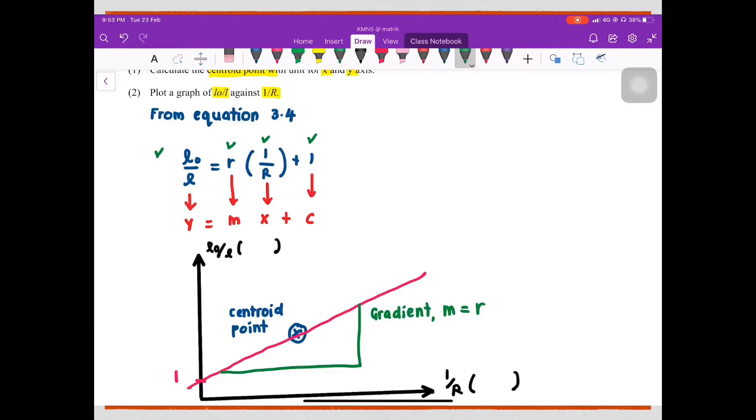From here, y is L0 over L, gradient is R1, x is 1 over R, and the y intercept is 1.